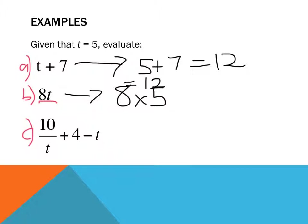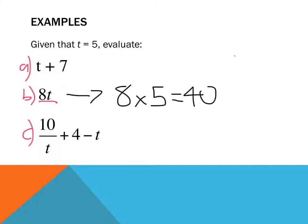And so, if t equals 5, that's 8 times 5. 8 times 5 equals 40. Remember that. If you see a number and a pronumeral, that is what that means - it means multiplication.